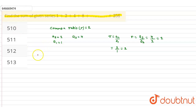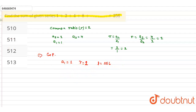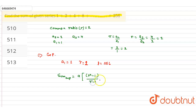That's why this is a GP. For this GP, the first term a1 is 1, and the common ratio r is equal to 2. The last term is 256. The formula for sum of a GP when r is greater than 1 is: S = a(r^n minus 1) divided by (r minus 1), where a is the first term.